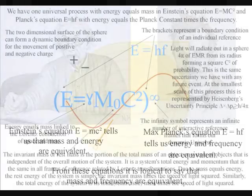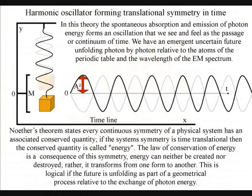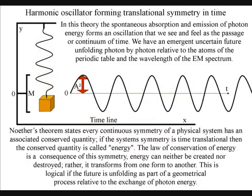From these equations it is logical to say that mass and frequency are equivalent. Therefore, any stable particle which has mass is a clock with a frequency oscillation that can be measured as a period of time as a process or continuum.